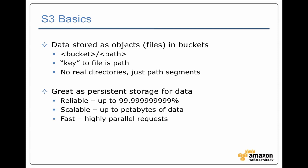Let's cover some of the basics of S3. All data is stored as objects, as files, in buckets. A file is referenced by a path that has both a bucket name at the start, a slash, and then the rest of the path to the file. Under the covers, S3 essentially acts like a key-value store where the key is this path — the bucket and then a directory path to a file under it. However, S3 doesn't have any real directories; the path underneath the bucket is essentially just a key.